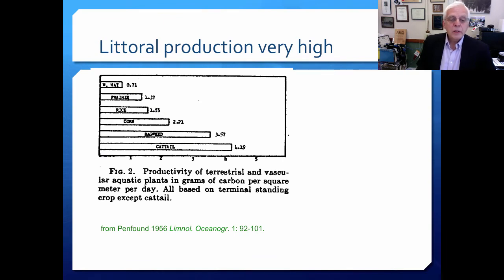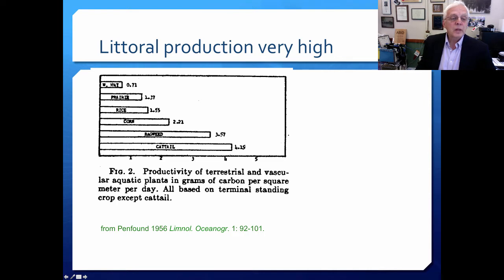Here's an example from a 1950s paper on productivity in various kinds of plants. Corn or maize production is at some level, and cattail production is about double that — cattail production is extremely high. Things like prairies, hay fields, and rice paddies are not nearly as high as some of these wetland plants. Wetland plants and littoral zone plants are extremely productive.